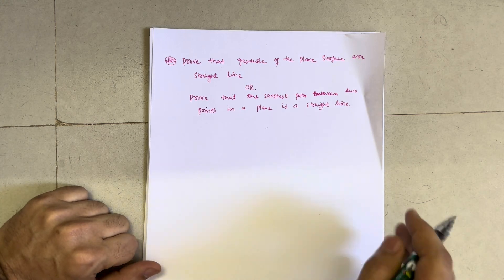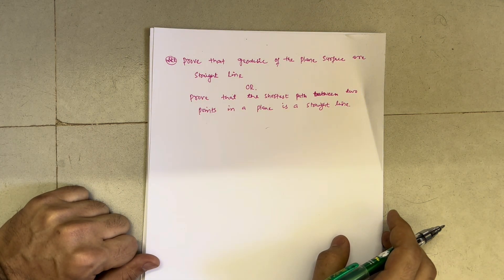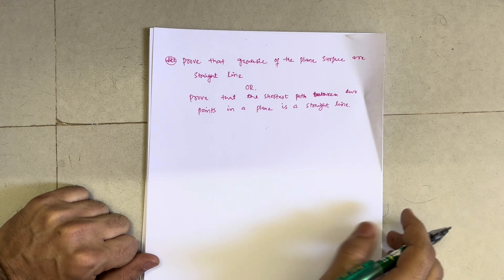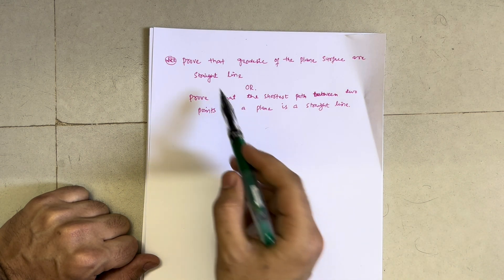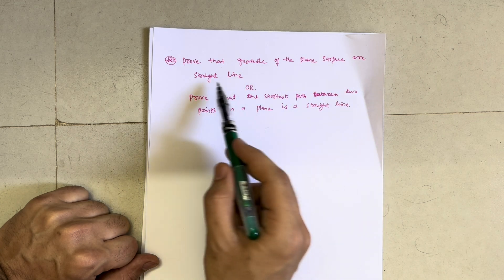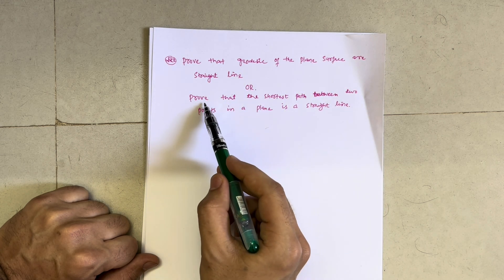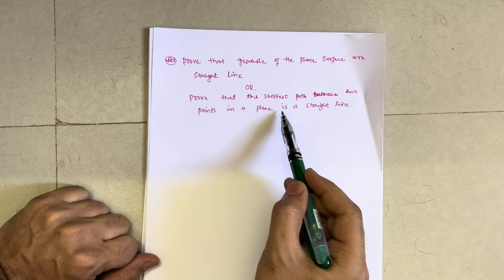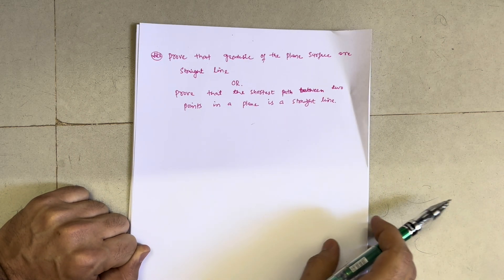Hello dear engineering students, I welcome you all into my channel again. Hope you are all doing well. In this video I will be solving this particular question which is repeatedly asked in examinations: prove that the geodesic of a plane surface is a straight line, or sometimes: prove that the shortest path between two points in a plane is a straight line.